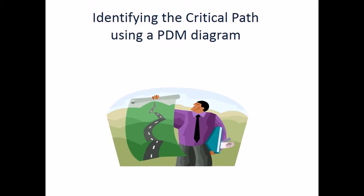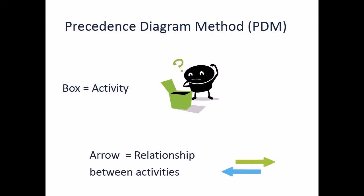In this podcast we will look at identifying the critical path using a PDM network diagram. PDM stands for Precedence Diagramming Method. In a PDM diagram the box represents the activity, and the arrow represents the relationship between the activities. PDM is the most commonly used network diagramming technique.